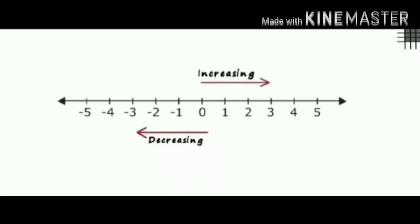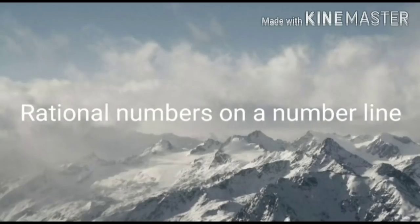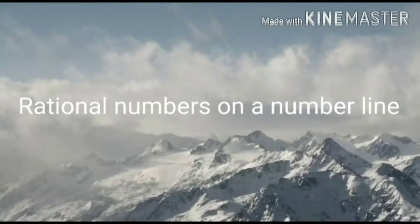Now dear students, let's recall a number line which you have studied in your 7th standard. In the middle of the line is 0; the right hand side of 0 is all positive numbers and the left hand side of 0 is all negative numbers. If we keep on moving towards the right hand side, the numbers will increase, and towards the left hand side, the numbers will keep on decreasing. Now we will study how to represent rational numbers on a number line in practice set 1.1.